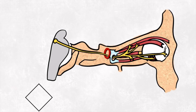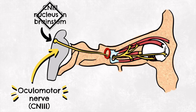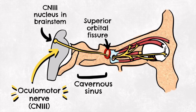The nerve can also be damaged anywhere along its course, starting at the nucleus in the brain stem, all the way down to the cavernous sinus, and beyond to the superior orbital fissure and the annulus of Zinn.